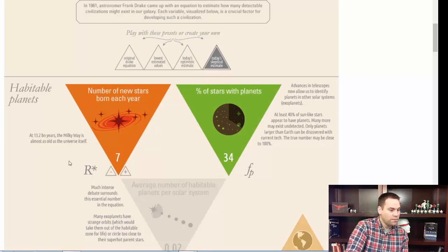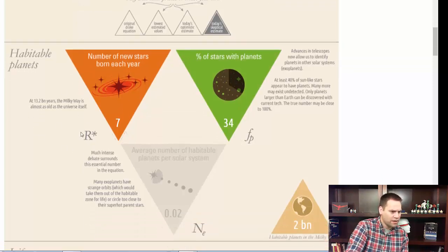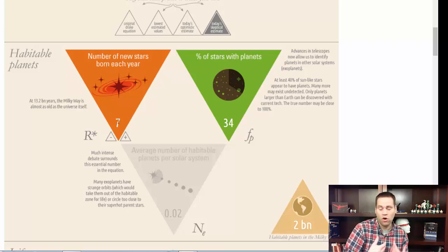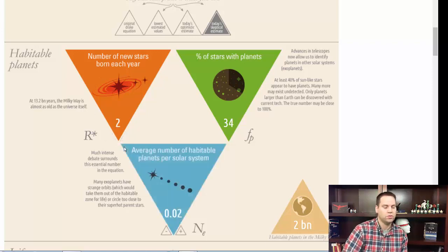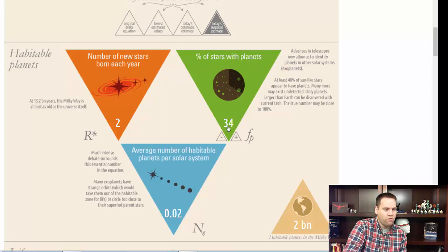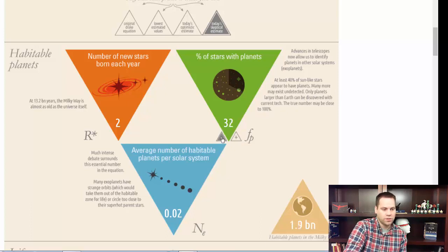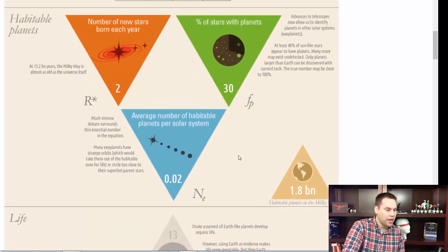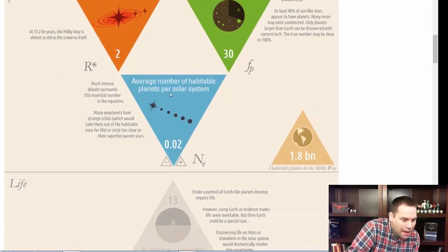Let's go with skeptical estimates. The number of new stars born each year — let's say at minimum two new stars per year, going below the skeptical preset of seven. The percentage of stars with planets: the data says at least 40% of sun-like stars appear to have planets, but let's be extra skeptical and say 30%.